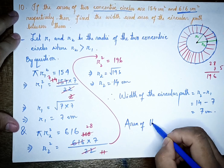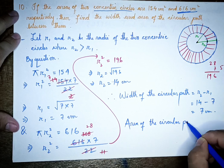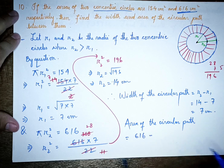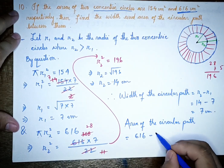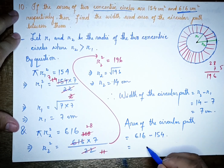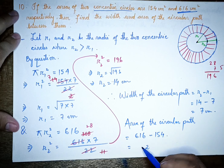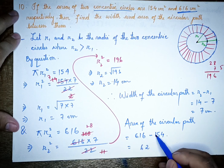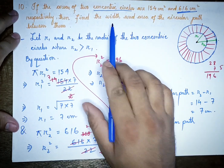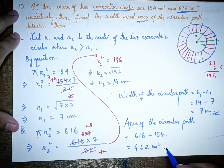Area of the circular path = area of larger circle minus area of smaller circle = 616 − 154 = 462 cm².